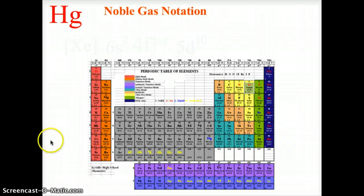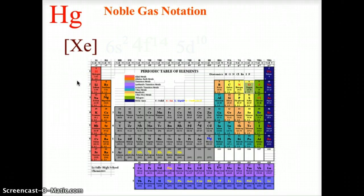Here we have mercury. Find mercury on your periodic table and write out the core notation or noble gas notation. Turn off the video now, then come back and see how you did. The noble gas above mercury is xenon. We then go to the sixth period 6s2, follow that with 4f14 5d10, and that is the noble gas notation or core notation for mercury.